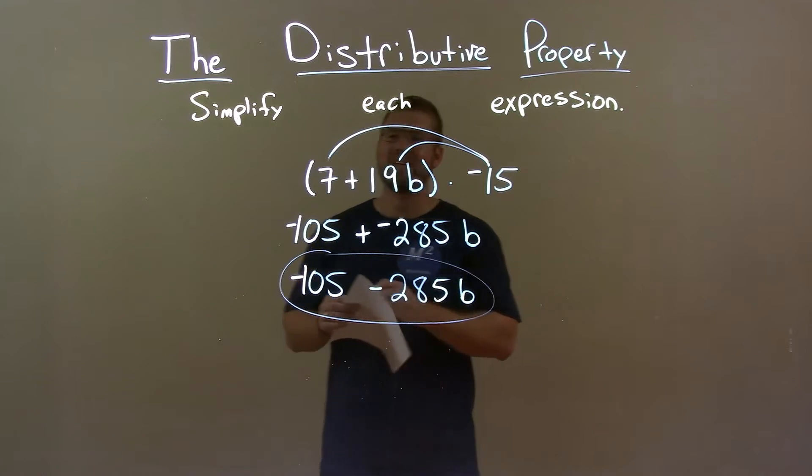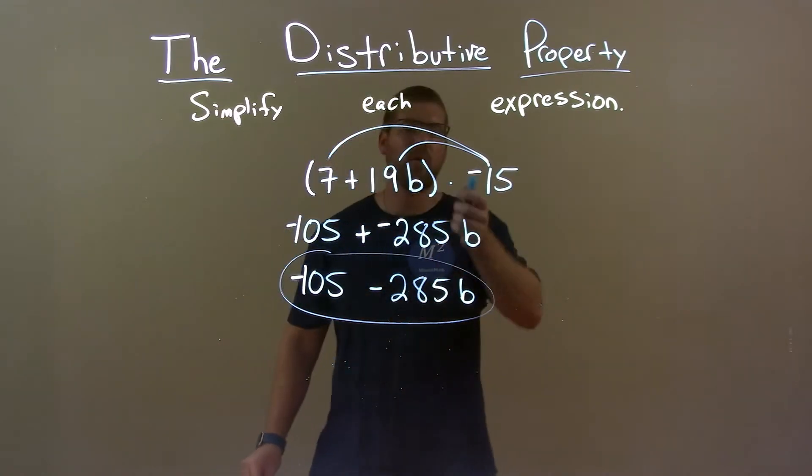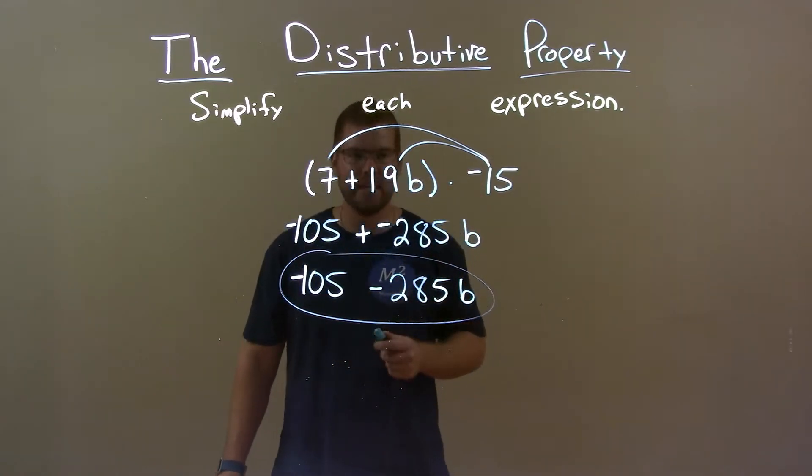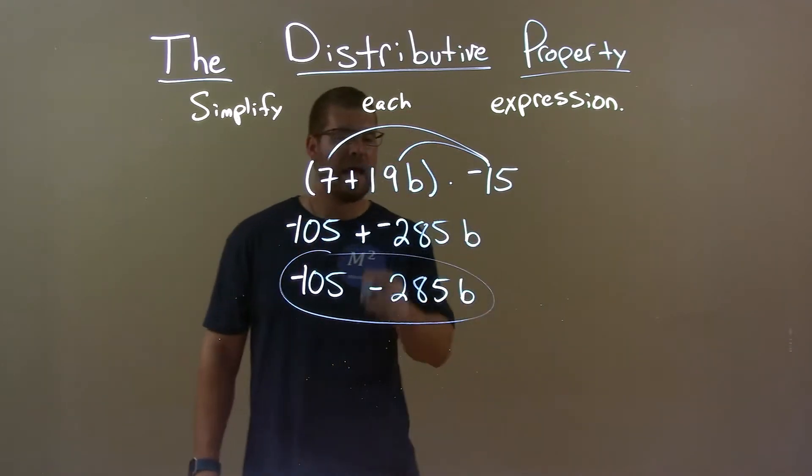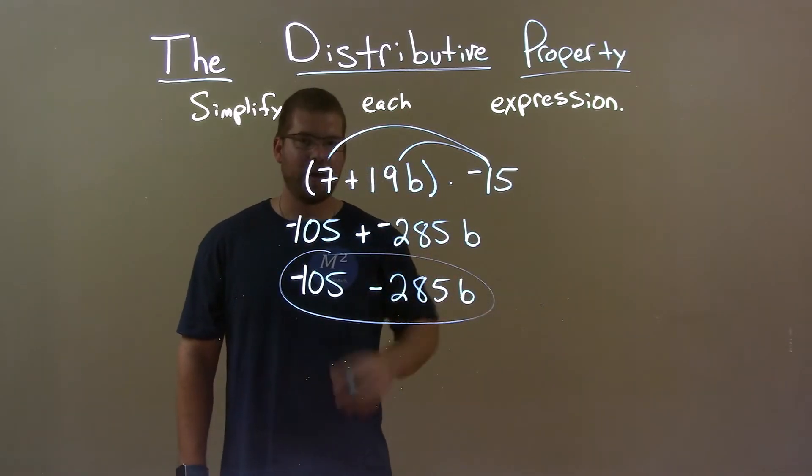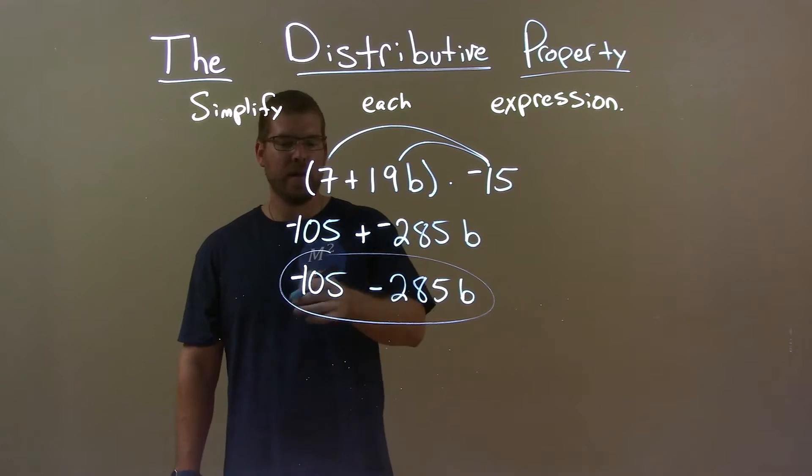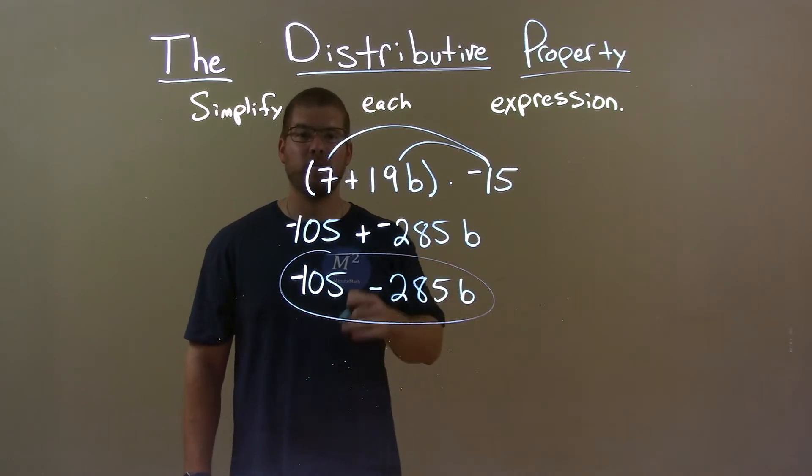So quick recap, we're given 7 plus 19b and we're multiplying that by negative 15. Well, multiply negative 15 to both parts and I got negative 105 plus a negative 285b. Adding a negative, same thing as subtraction. So final answer here, negative 105 minus 285b.